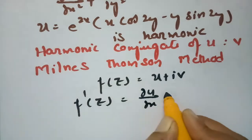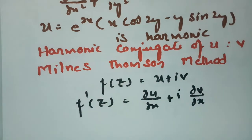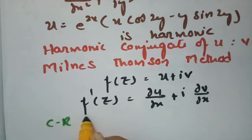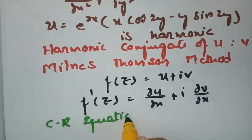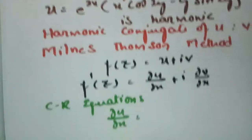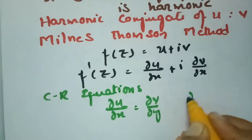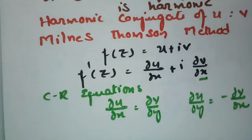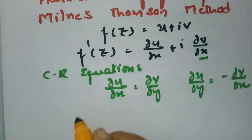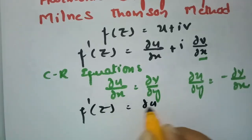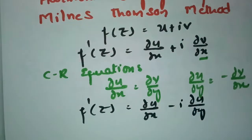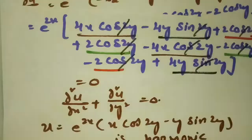Using the Cauchy-Riemann equations: ∂u/∂x = ∂v/∂y and ∂u/∂y = −∂v/∂x. So I replace ∂v/∂x with −∂u/∂y, giving f'(z) = ∂u/∂x − i·∂u/∂y.